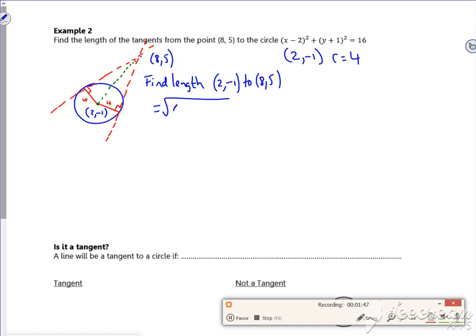So I'm going to find the length from (2, -1) to (8, 5). So the change in x is 6, the change in y is 6. Never mind putting a bracket around it. So that would be 6 root 2. So that's the length there, 6 root 2.